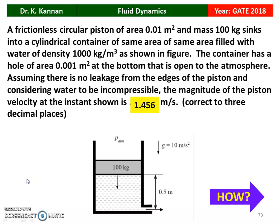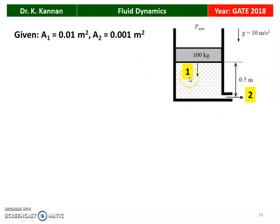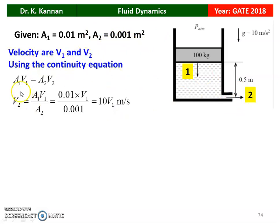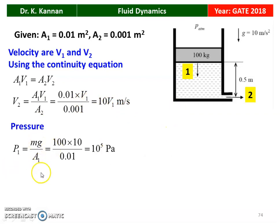This is the arrangement: piston area A₁ = 0.01 m², hole area A₂ = 0.001 m². Using continuity: A₁V₁ = A₂V₂, so V₂ = (A₁/A₂)V₁ = (0.01/0.001)V₁ = 10V₁. The pressure due to the piston: P₁ = Mg/A₁ = (100 × 10)/0.01 = 10⁵ Pascal.